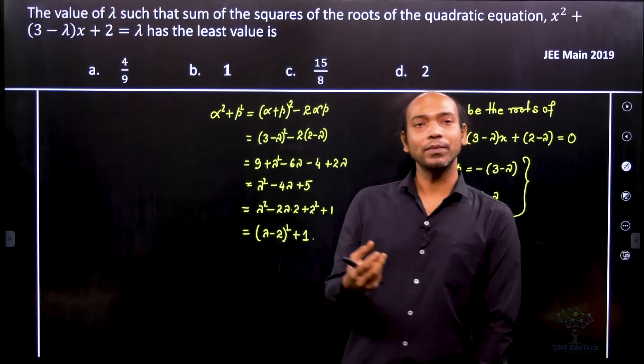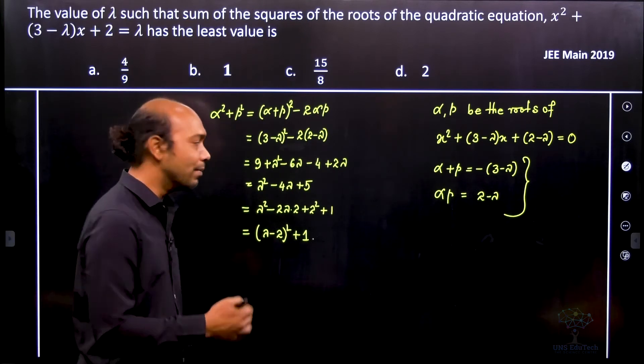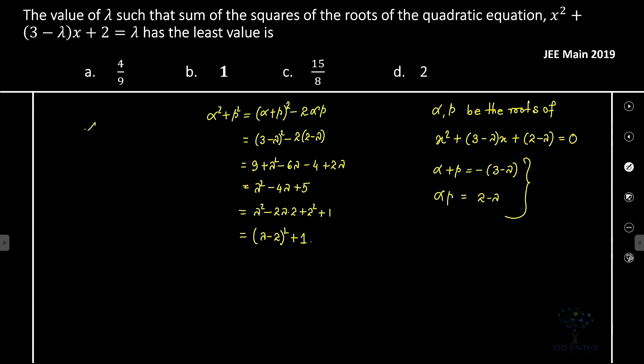Now see that it is something square plus 1. So alpha squared plus beta squared is minimum or the least when lambda equals 2. That's obvious, right?